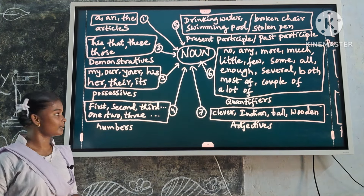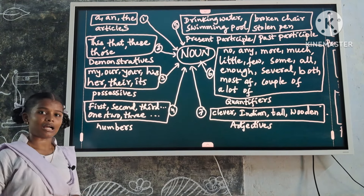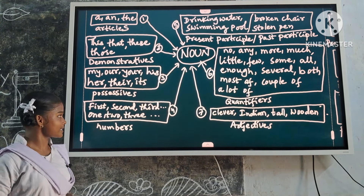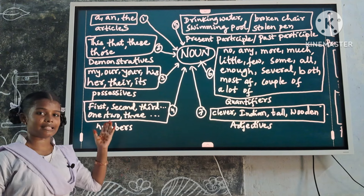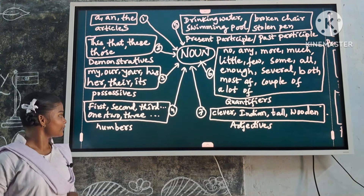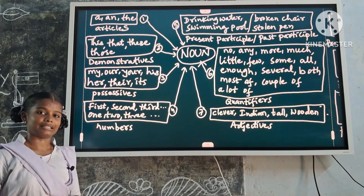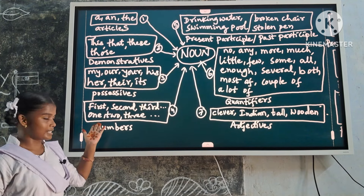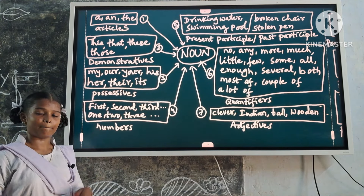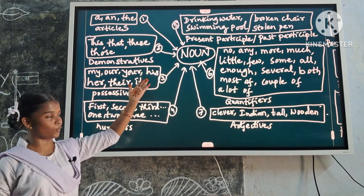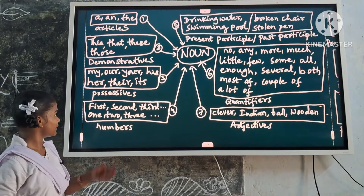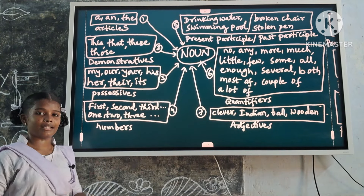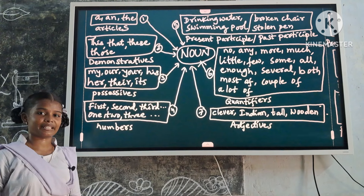Next one: numbers — ordinal numbers and cardinal numbers. First, second, third are ordinal numbers. One, two, three are cardinal numbers. These are noun modifiers because they describe the noun. Examples: first boy, second boy, third boy, one boy, two boys, three boys.